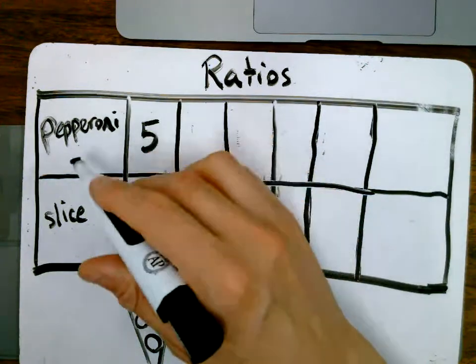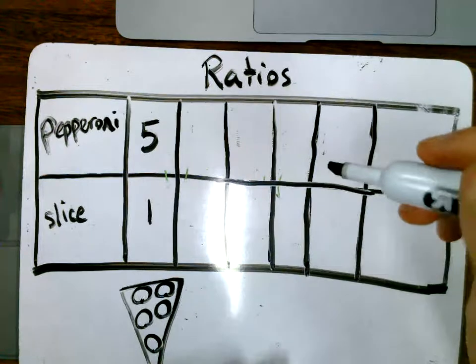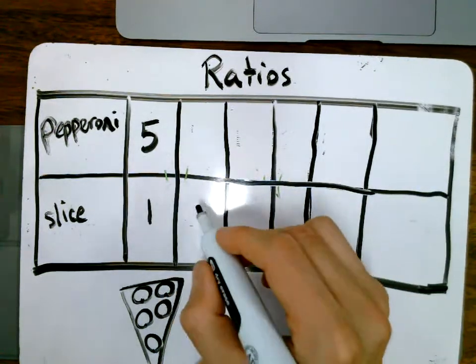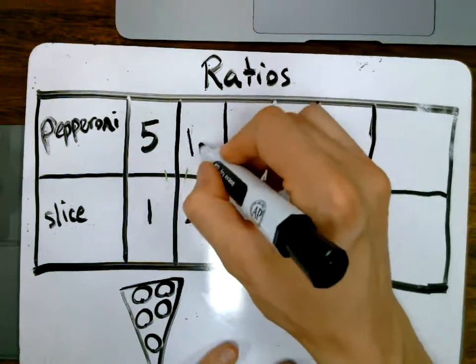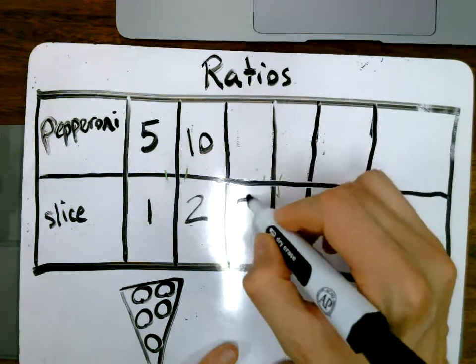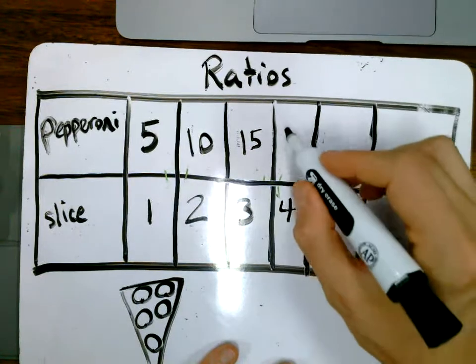So one slice of pizza has five pieces of pepperoni, and we always want that ratio to be true because that's perfect. If we have two slices of pizza, how much pepperoni do we have? That's 10. And if we had three, that would be 15, and I think you get the idea, four would be 20.